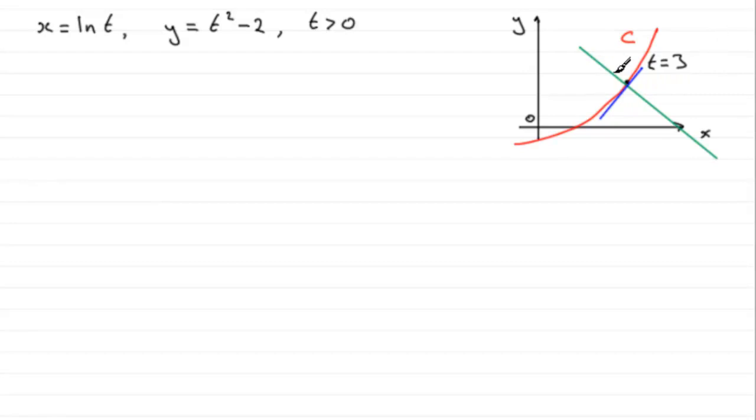Now if we're to find the equation of the normal, then what I'm going to use is the form y minus y1 equals m bracket x minus x1. And I'm going to need to find a point x1, y1 on it, and that's going to be when t equals 3. And m the gradient,